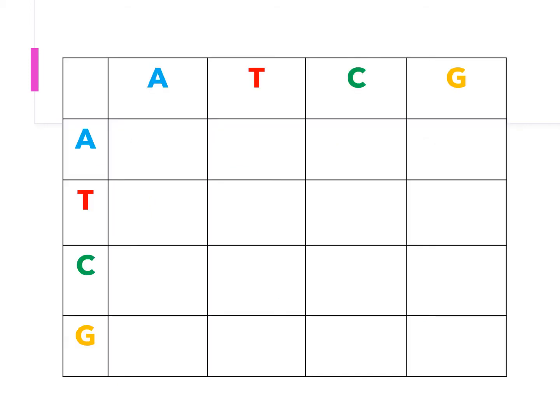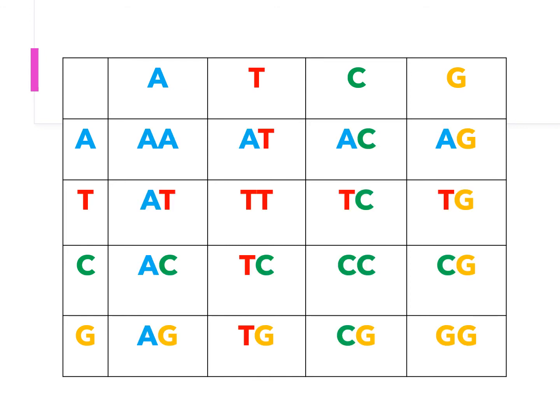What if we use two nitrogenous bases together to code for one amino acid? How many combinations would we have? If we use two nitrogenous bases as a group, we would have 16 combinations to code for 16 amino acids. But still the problem exists — we have 20 amino acids in our body, and we only have 16 combinations. We still do not have enough coding for all the amino acids.